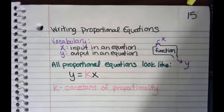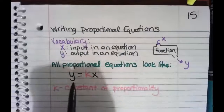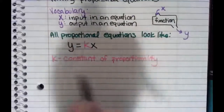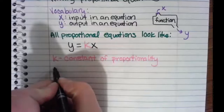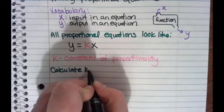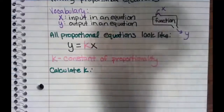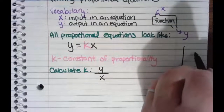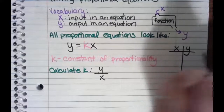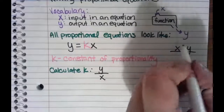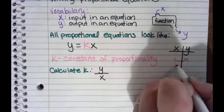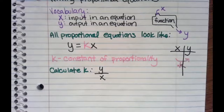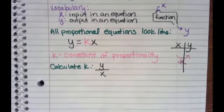We find that constant of proportionality by what we want divided by where we start. Now we have these letters to define those things, so we can say we find K by Y over X — Y is what we want, divided by where we start. In a table, X is always on the left side and Y is always on the right. We ask ourselves what we multiplied by to get from one side to the other — that's K, our constant of proportionality.